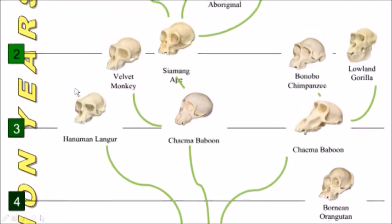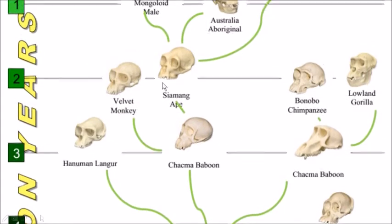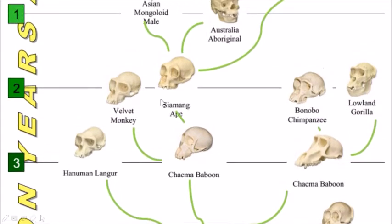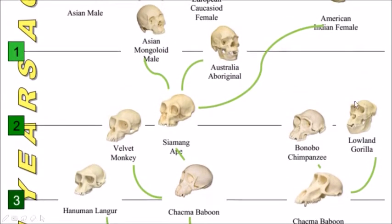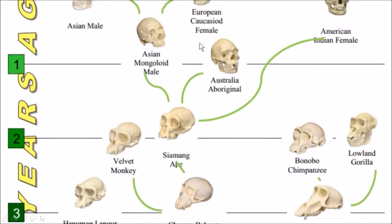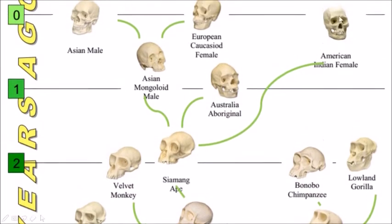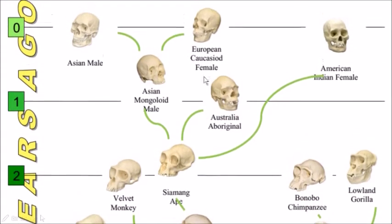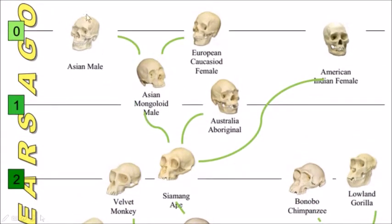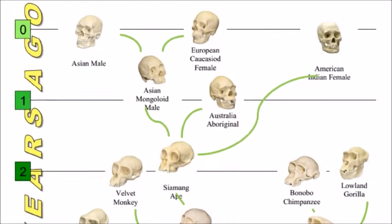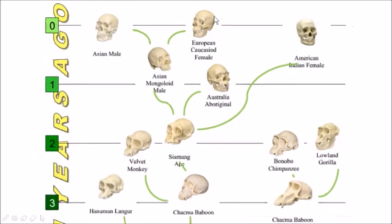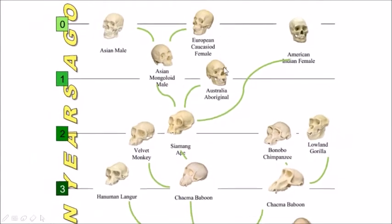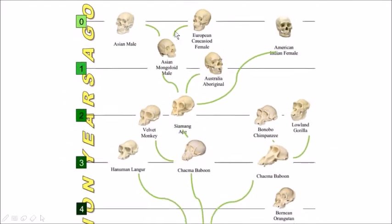Hanuman Langur, Velvet Monkey, Siamang Ape, Bonobo Chimpanzee, Lowland Gorilla, Australian Aborigine, American Indian, Asian Mongoloid, Asian Male, European Female. Look at the bone structure differences between contemporary humans — protrusion of the brow, forehead, and jaw.